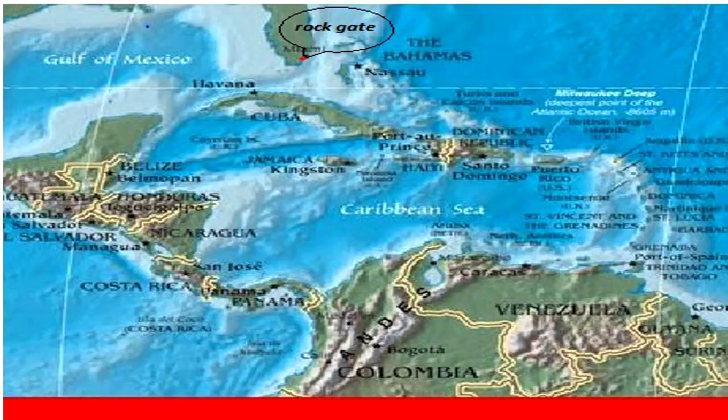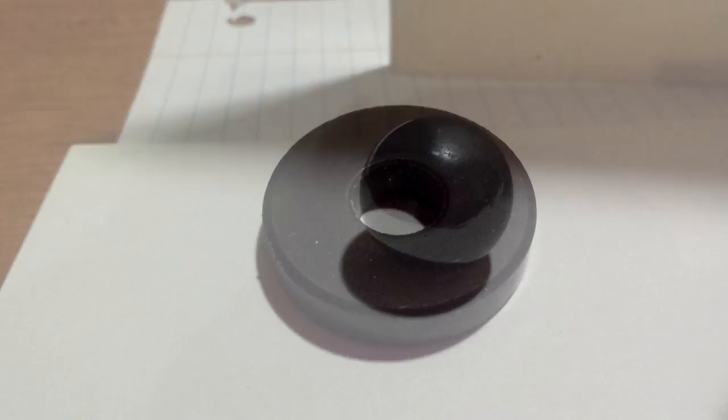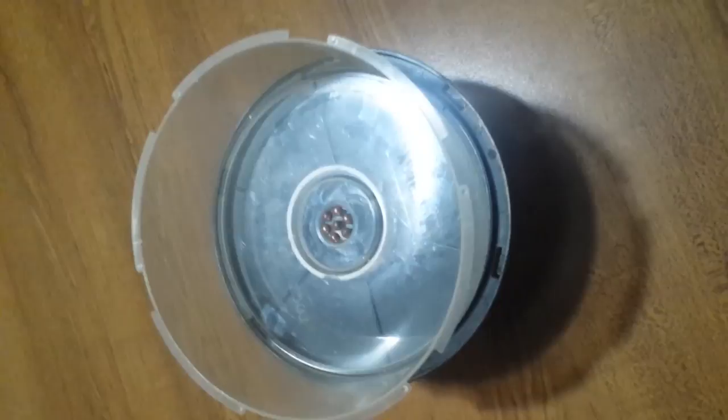He then describes what a magnet is: a bar, a horseshoe, a sphere, and magnets with no end. They all have a north and a south pole. What he means is, all magnets have both poles, and the magnet with no end is a toroidal magnet.